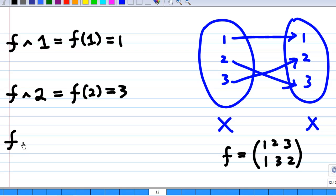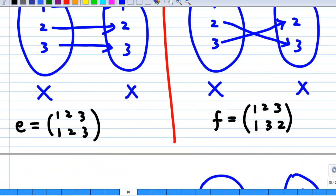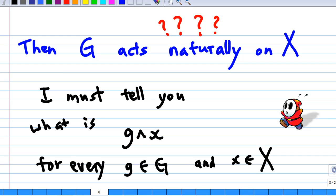How about f at 3? Since f is a mapping from X to X, I can take this as the image of 3 under f, which is 2 here. So when I mean G acts naturally on X, basically it means G acting on x is just the image of x under G, since G now is mapping on the set X to the set X again.